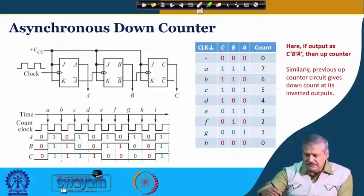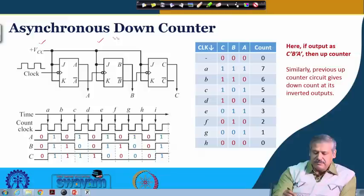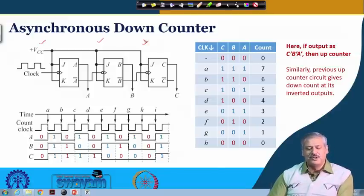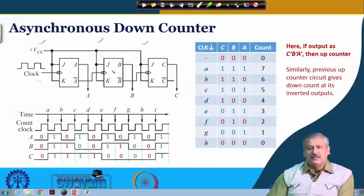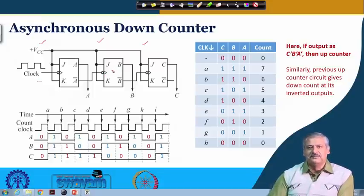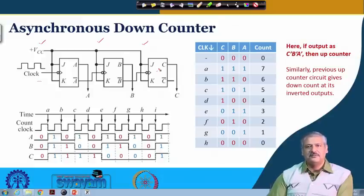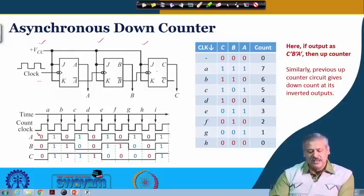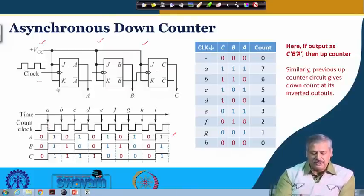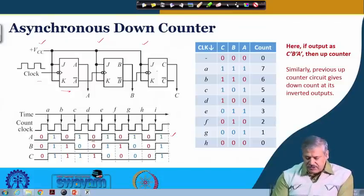In the down counter circuit, the input side remains the same — each flip-flop will toggle, and the clock is given to the first flip-flop. However, instead of A, A-bar is fed as the clock to flip-flop B, and B-bar is fed as the clock to flip-flop C. The initial state is 0 0 0 and A will toggle on every negative edge of the clock, giving 0, 1, 0, 1 — similar to before.